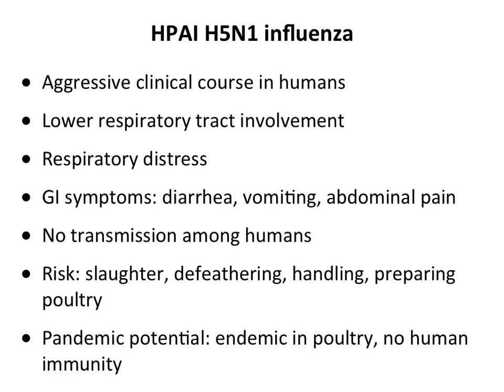These H5N1 avian influenza viruses have been declared to have pandemic potential. They're endemic in poultry in many parts of the world and in large numbers. There's no immunity in people — we don't have antibodies against them, and previous influenza experience doesn't help because there's no cross-reactivity. So many governments and the CDC have decided this virus is serious and we must prepare, spending a lot of money on surveillance, vaccine preparation, and stockpiling antivirals.